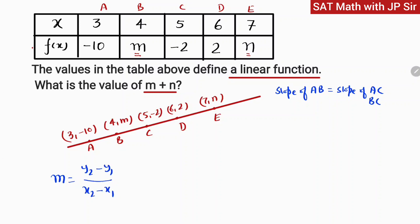Applying the same formula, slope of AB equals m plus 10 upon 4 minus 3, and this equals slope of AC, that is minus 2 plus 10 upon 5 minus 3. So we get m plus 10 upon 1, 8 upon 2, which is 4.